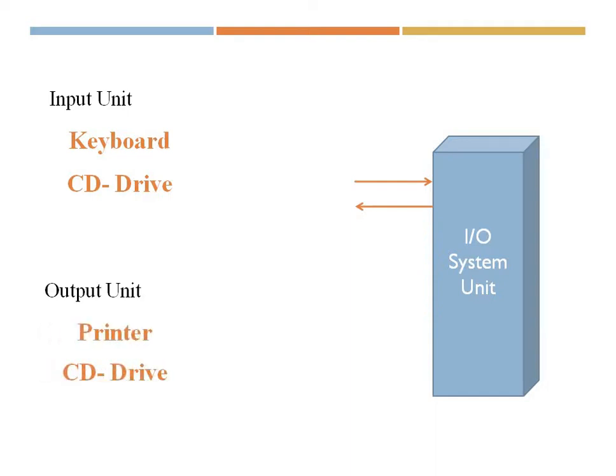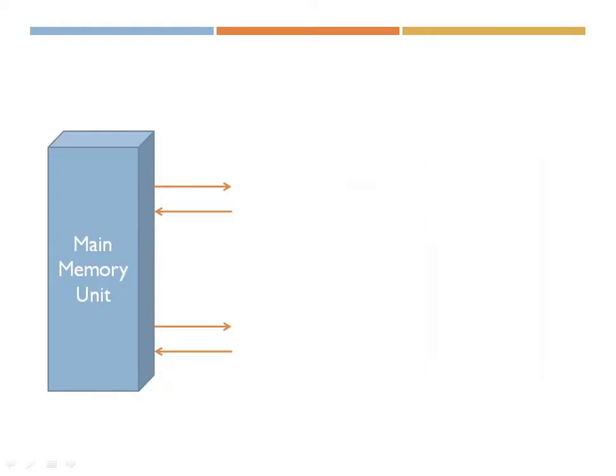Next is the main memory unit. The main memory unit is used for storing instructions and data which we may need for the processing of any program.